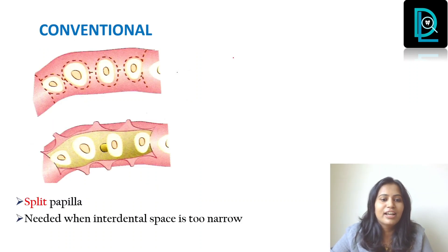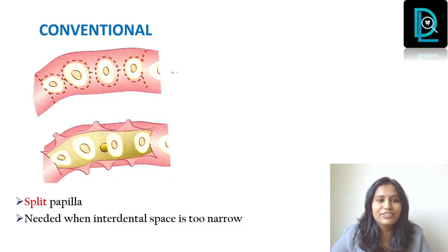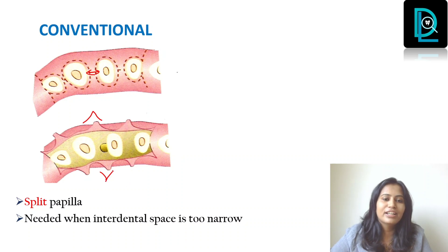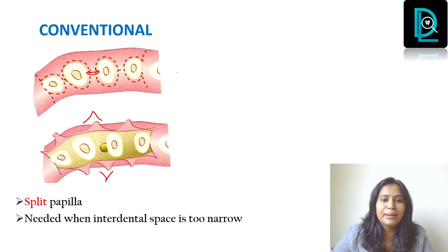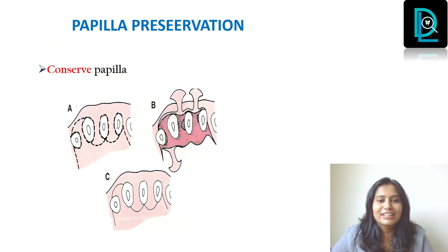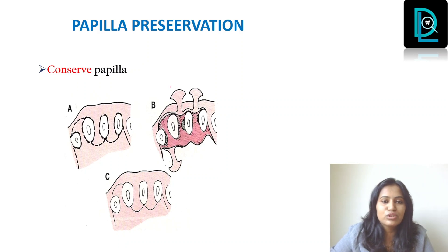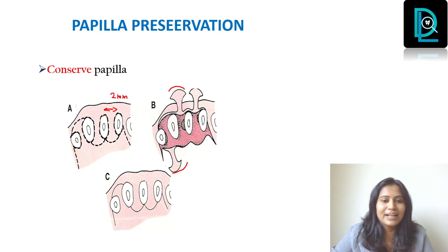Now the next classification is based on the management of papilla — it could be either conventional or papilla preservation. In the conventional flap, you split the papilla into two: one half is accommodated with your buccal side and the other half with the lingual side. This is done when you have tight contacts between teeth or interdental spaces too narrow. Examples are the envelope flap and modified Widman flap. In the papilla preservation flap, you accommodate the entire papilla to either the buccal or lingual side, but you need a minimum distance of two millimeters between teeth. Whenever you have a little interdental spacing, you can preserve the papilla this way, so the chances of black triangle formation are very low.